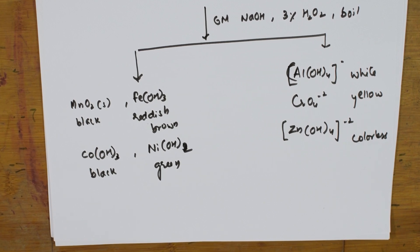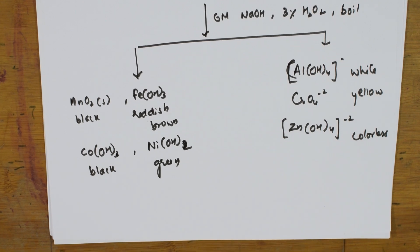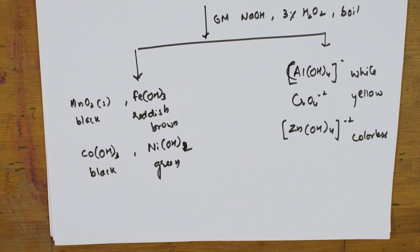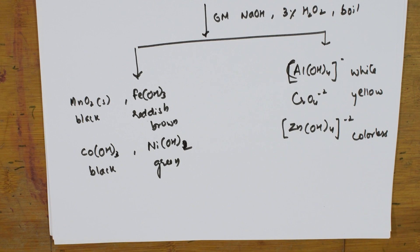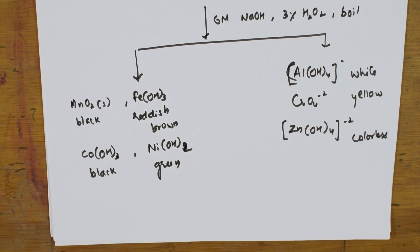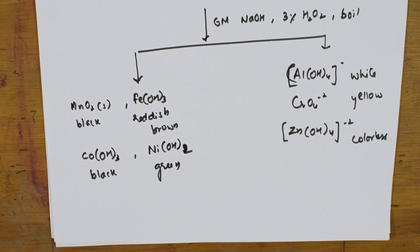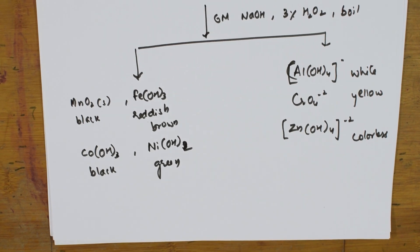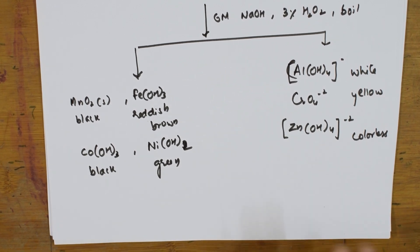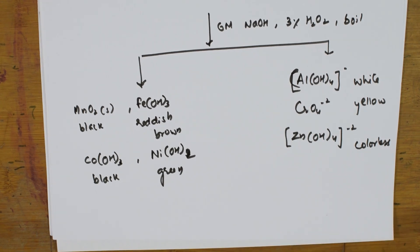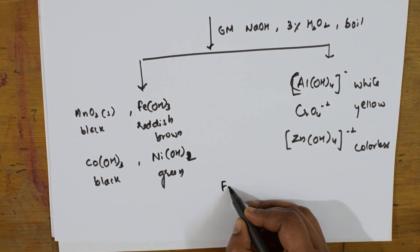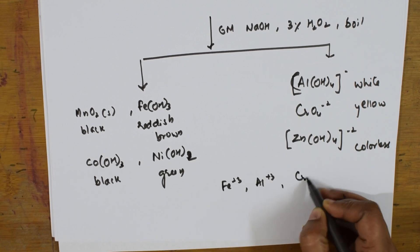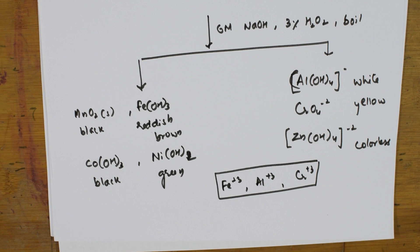Go step by step carefully and don't get confused — the flow chart is easy to learn. Now we perform individual confirmatory tests. For Grade 12, the most important cations in Group 3 are Fe²⁺/Fe³⁺, Al³⁺, and Cr³⁺. Let us now start with the confirmatory tests for each of these.